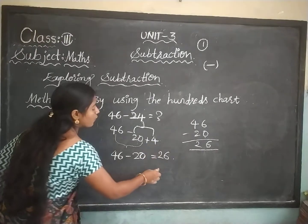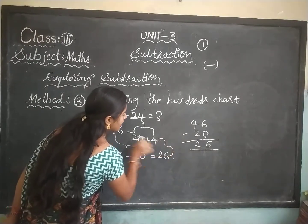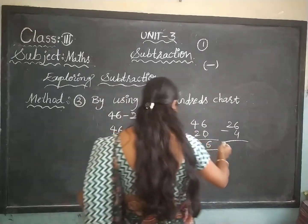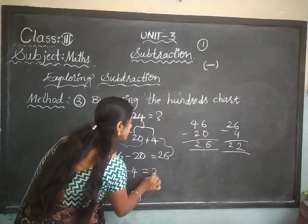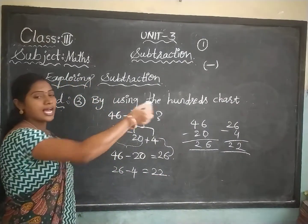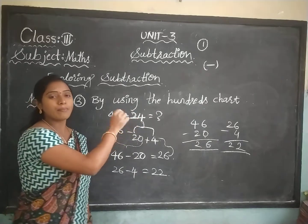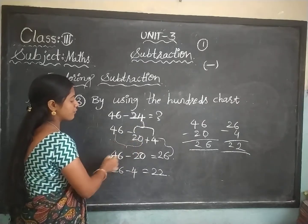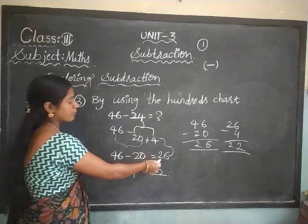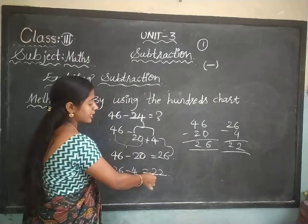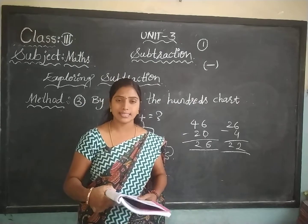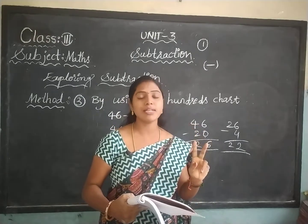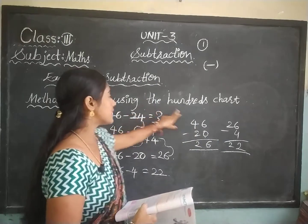And one more step: 26 minus 4. In the ones place, 6 minus 4 equals 2; tens digit stays as 2. So 26 minus 4 equals 22. The answer is 22. This is Method 3 by using the 100 chart. So to revise: Method 1 is by using the place value, Method 2 is by counting, and Method 3 is by using the 100 chart.